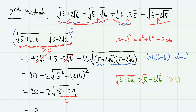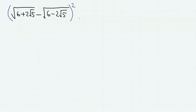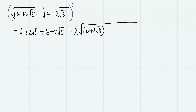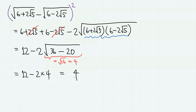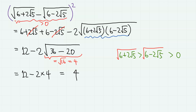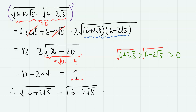Next, we do the same thing for the second part. We square it to obtain (6 + 2√5) + (6 - 2√5) - 2√[(6 + 2√5)(6 - 2√5)]. The 2√5 terms cancel, giving 12 minus 2 times the square root of that product. That product becomes 6² - (2√5)² = 36 - 20 = 16, so the square root is 4. Therefore, 12 - 2 × 4 = 4. Since 6 + 2√5 > 6 - 2√5 and both are positive, this expression is positive, so taking the positive square root of 4, this equals 2.